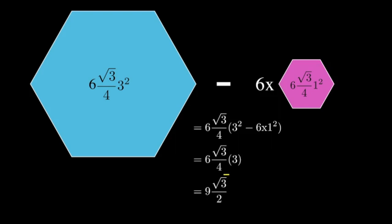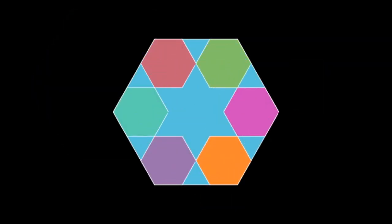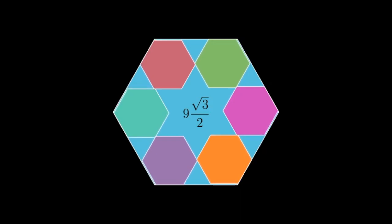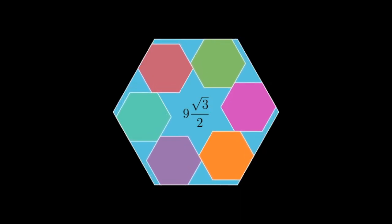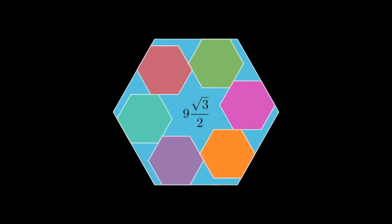So going back to our diagram, we can see that the area of the blue region in our shifted figure is 9 root 3 over 2. But we can shift it back to the original diagram, and see that the blue area stays the same. It's still 9 root 3 over 2.